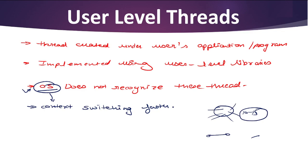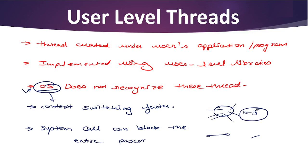One more important point: user level threads are transparent to the system kernel. For user level threads, a system call can block the entire process. The representation of user level threads is very simple — it uses registers, PC, stack, and mini thread control blocks, all of which are stored in the address space of user level processes.